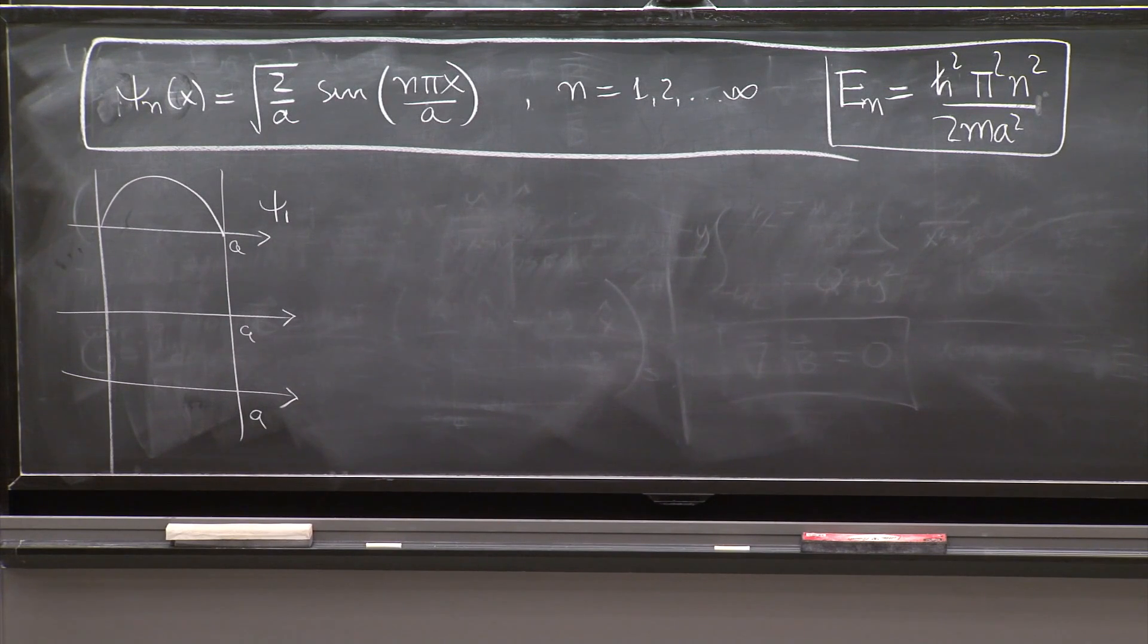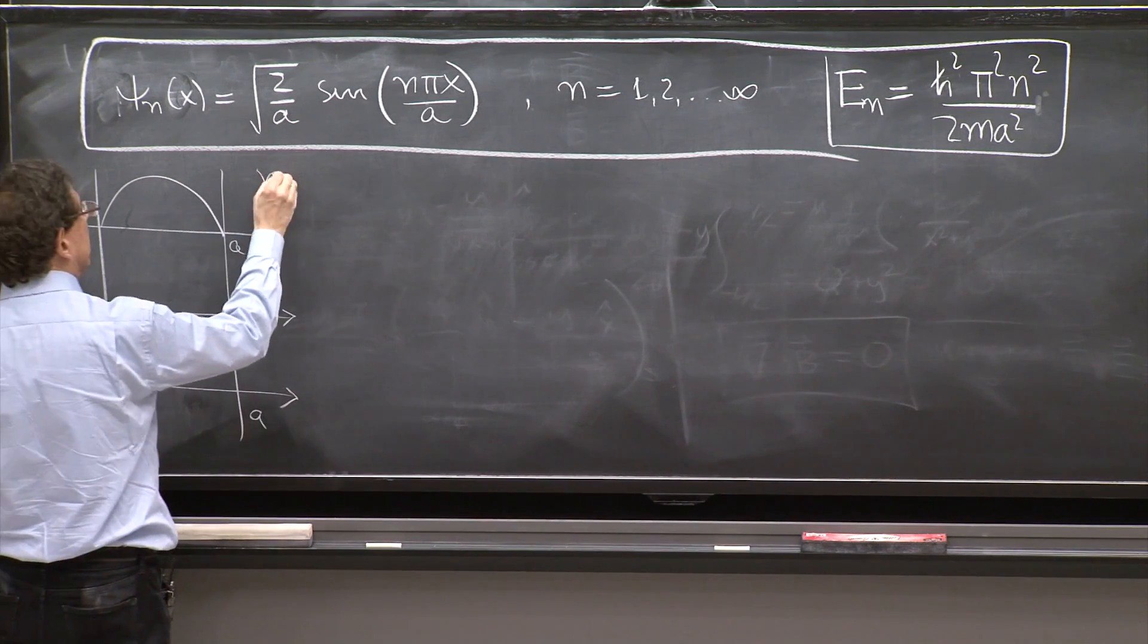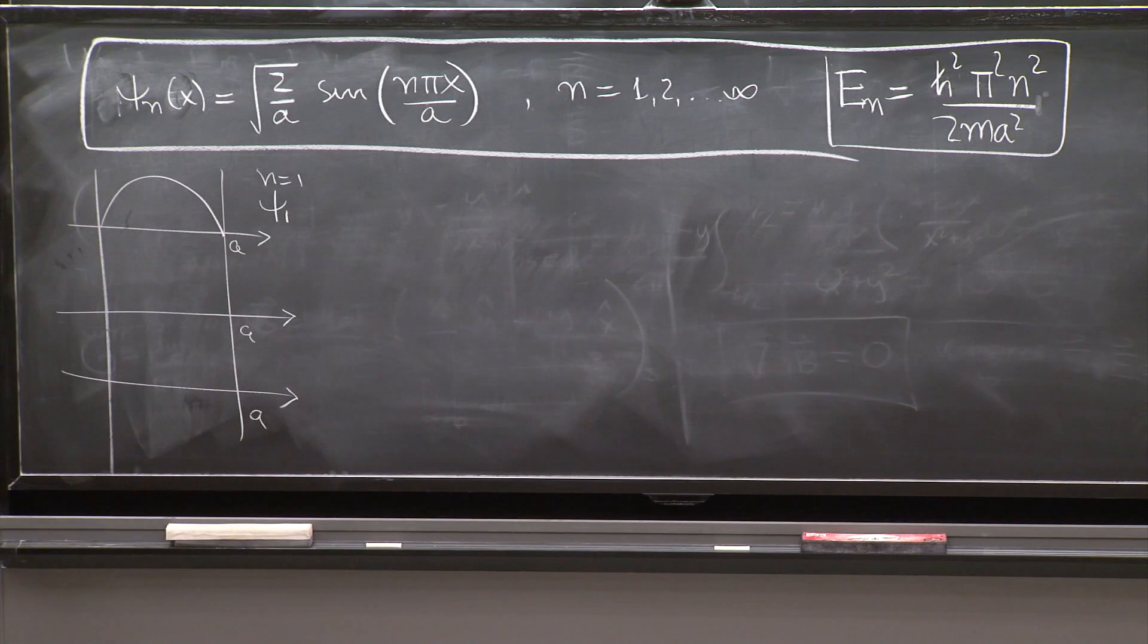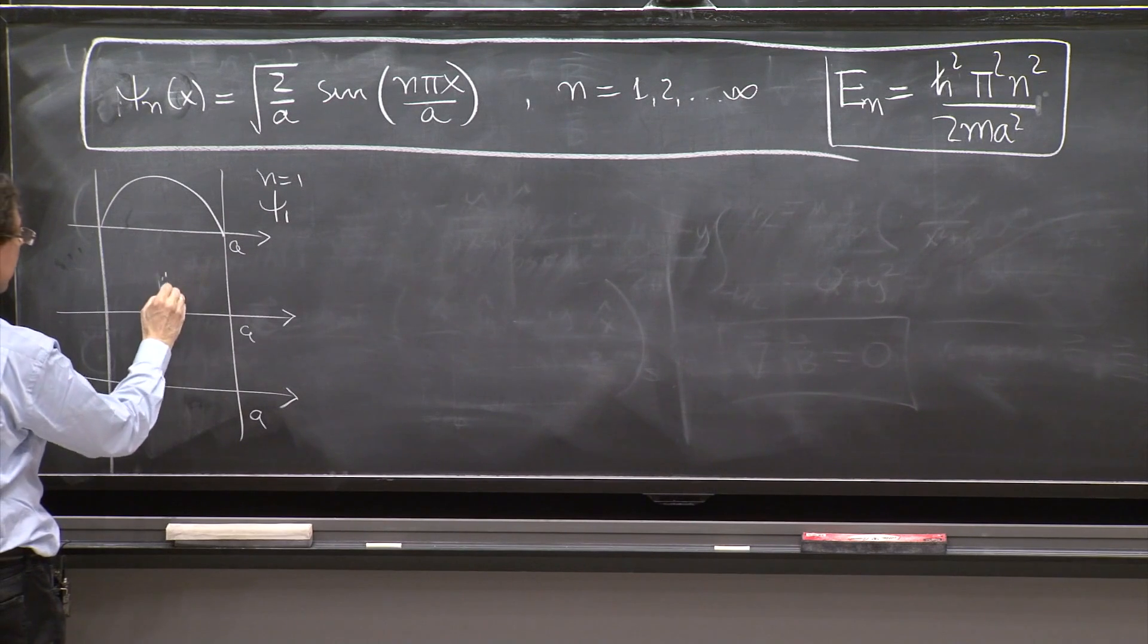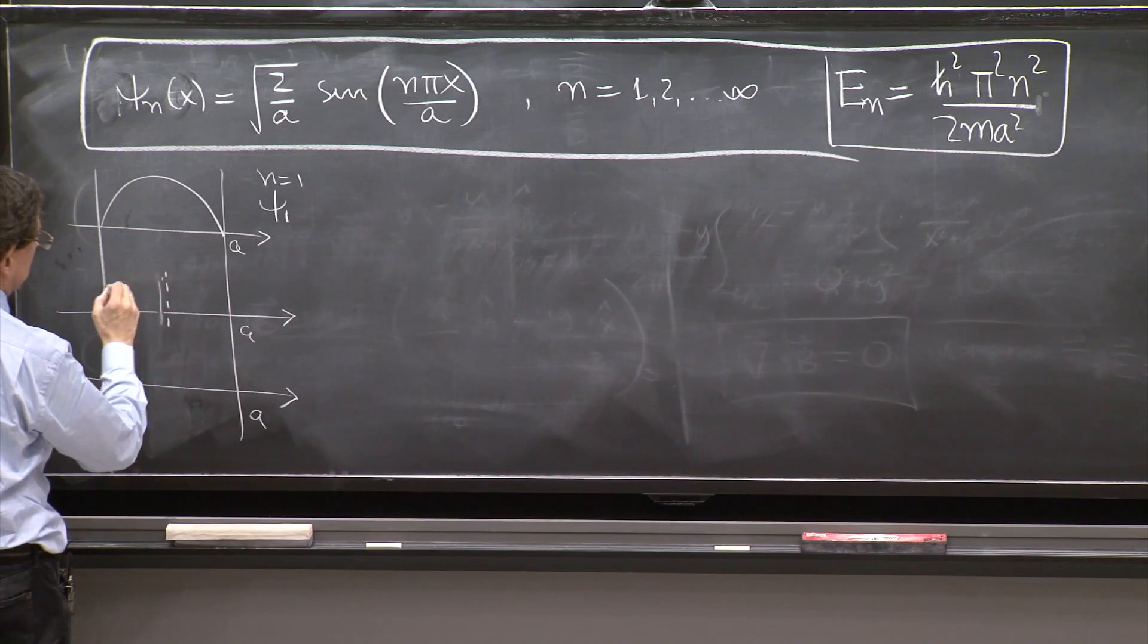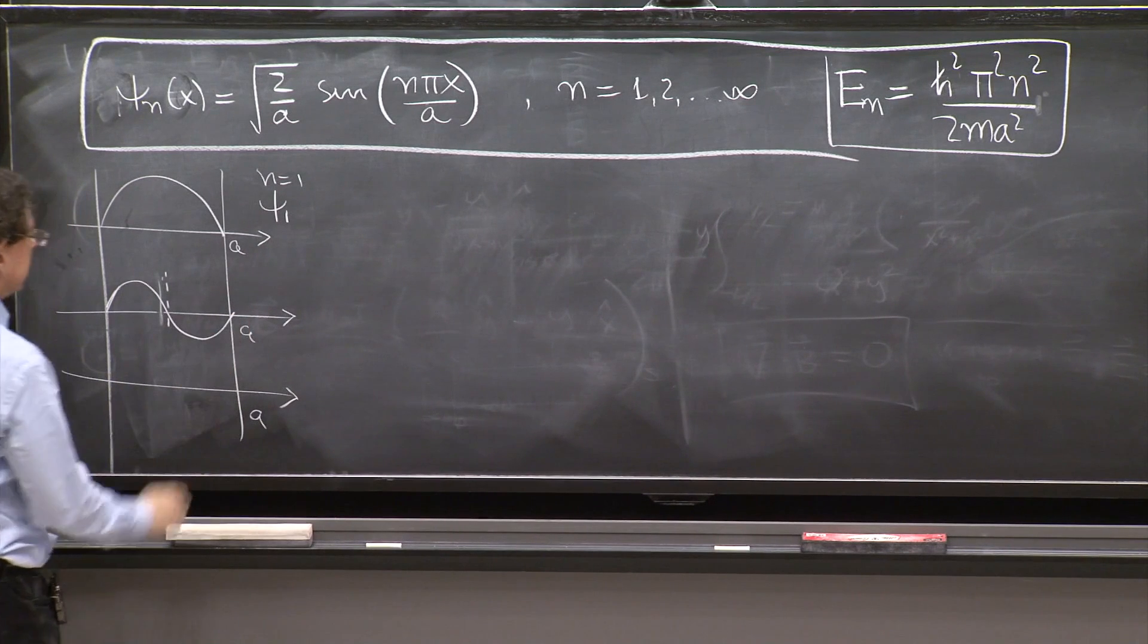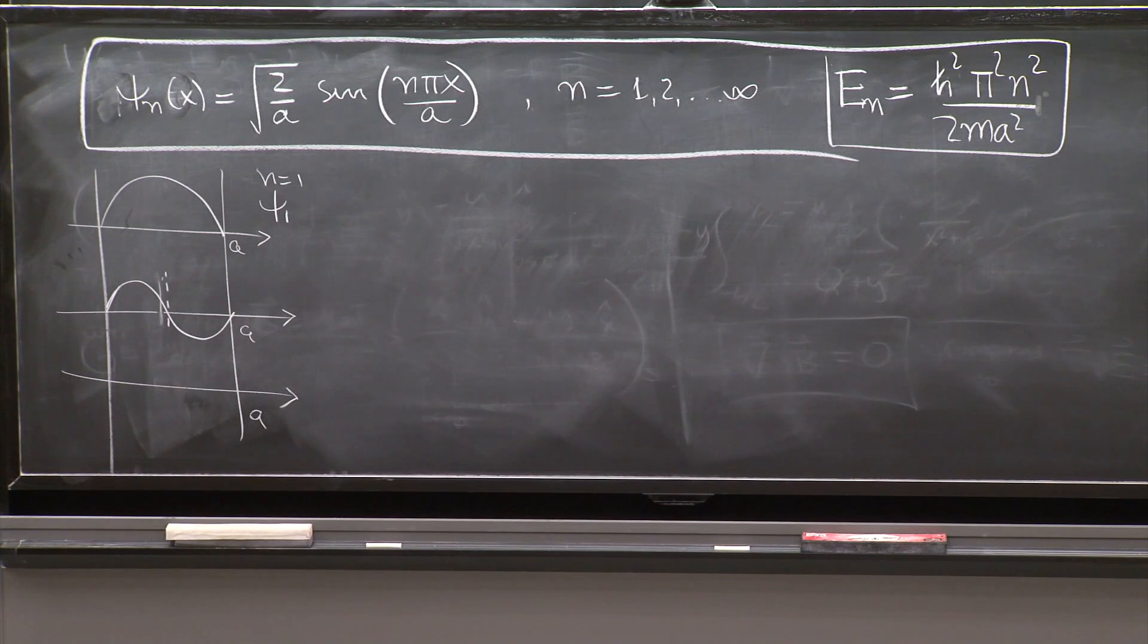The next one corresponds to n equal 2 and begins as a sine, and it just goes like this. You add half a wave each time.